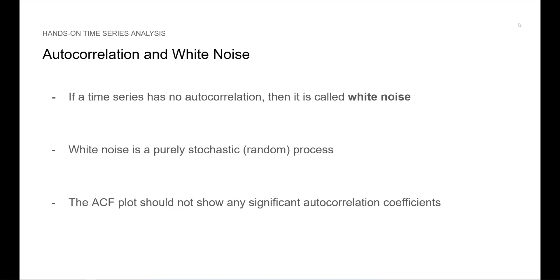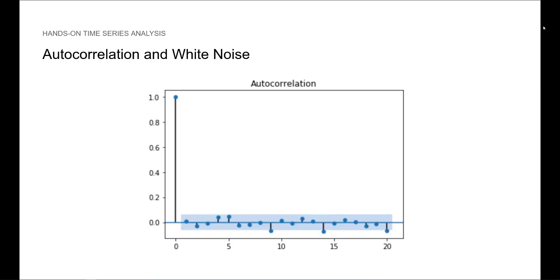The ACF plot should not show any significant autocorrelation coefficients. Here, we have an example of an ACF plot for a purely random time series. As you can see, only the autocorrelation at lag 0 is significant because it is always 1. After, all coefficients are within the blue area, meaning that they are not significant.